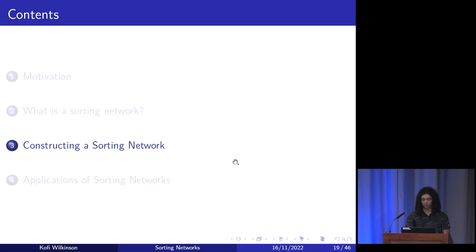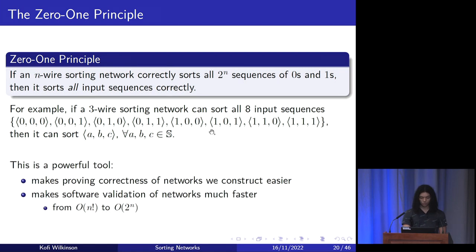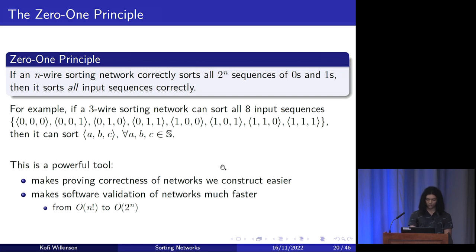Now I'm going to look at an example of an efficient sorting network. To construct it, I'll first prove what's known as the zero-one principle. This principle says: if an n-wire sorting network correctly sorts all 2^n sequences of zeros and ones, then it will sort all input sequences correctly. For example, if we had a three-wire sorting network that can sort all eight binary input sequences, then it can sort any input sequence over any set with a total ordering. This principle is powerful for two reasons: it makes proving correctness of constructed networks much easier, and it makes software validation much faster — reducing the problem from size n! to size 2^n.